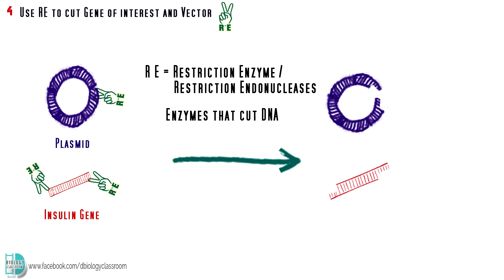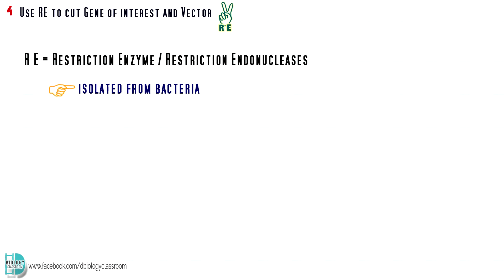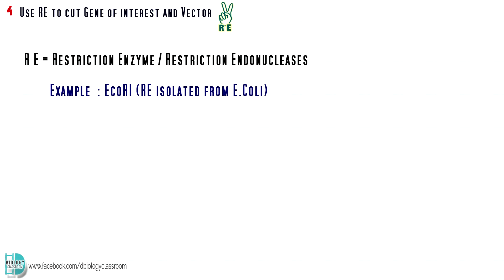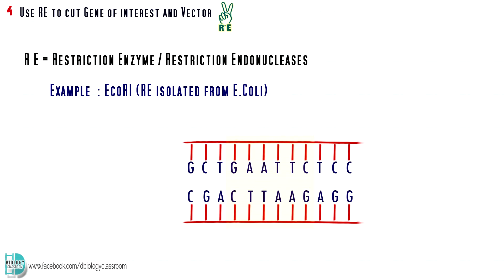When you have both the gene of interest and a suitable vector, it is time to combine them into one piece. Restriction enzyme or restriction endonucleases are used to cut the DNA. So, they will have sticky ends which are complementary to each other. RE is an enzyme isolated from bacteria. It has the ability to make a double-stranded cut. They recognize specific sequences on DNA. For example, EcoR1 recognizes and cuts on the sequence GAATTC. The sequence is known as a restriction site. A restriction site is always palindromic. It means they read the same at both sites from the opposite direction.